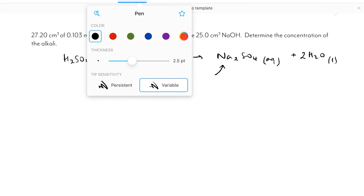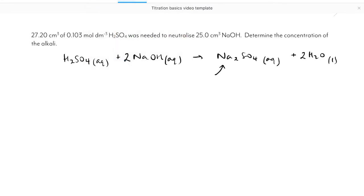The next step is to sort out our information. I'm a big fan of setting things out neatly in a way that allows us to follow our own working if we get lost. For the acid, I have a volume of 27.20 cm³ and a concentration of 0.103 mol dm⁻³. For my sodium hydroxide, my volume is 25.0 cm³ and the concentration is unknown. This is what we've been asked to find.